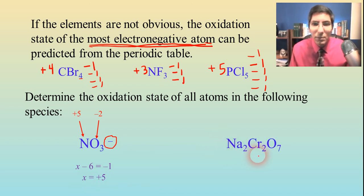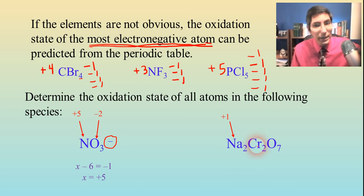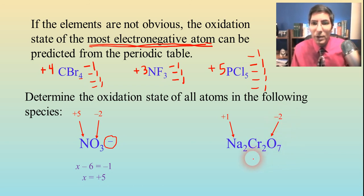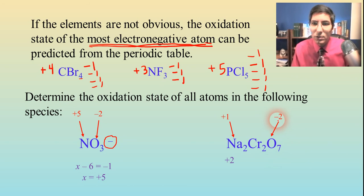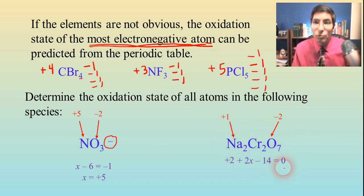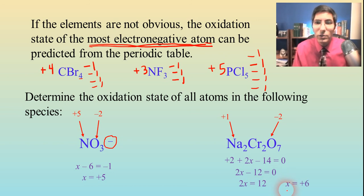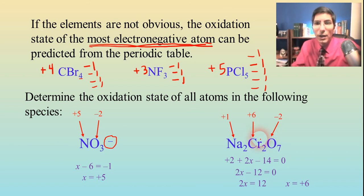Or we could look at sodium dichromate. Sodium is going to be positive one — we've got two of those. We don't know what chromium is; it's a transition metal so it could be one of several things. Oxygen is negative two and we have seven of those. Setting up the equation: plus two (for the two sodiums) plus 2X (for the two chromiums) minus fourteen (for the seven oxygens) equals zero because this is a compound. Simplifying: 2X minus 12 equals zero, 2X equals 12 — so chromium has a charge of positive six. You probably wouldn't have guessed that just by looking at the periodic table.